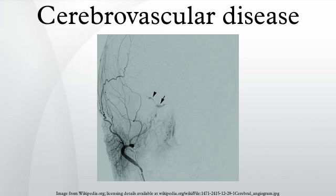Subtypes of stroke. Transient ischemic attack: This is a condition in which the blood flow is quickly restored and the brain tissue can fully recover, and the symptoms are only transient, leaving no sequelae. In order to diagnose this entity, all neurologic signs and symptoms must have been resolved within 24 hours without evidence of brain infarction on brain imaging.